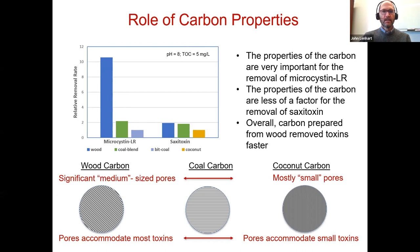The reason why is a reflection of the pore volumes associated with these different carbon types. Wood-based carbon is comprised of a significant proportion of medium or meso-sized pores. Coconut carbon, on the other hand, is comprised mostly of very small, micro-sized pores. Coal, depending on the type or blend, will have a variation of these pore types. Because wood-based carbon has a greater proportion of medium-sized pores, it better accommodates most toxin types. Microcystin, being the larger toxin, is removed much more readily with wood. For smaller toxins like saxitoxin, all carbons perform similarly because saxitoxin's smaller size allows it to access a variety of pore types.